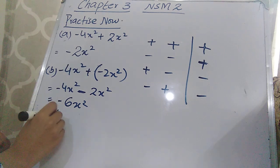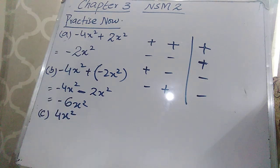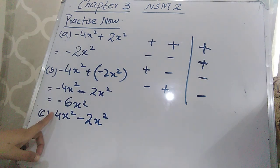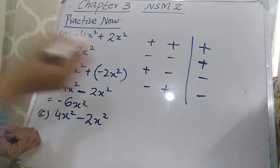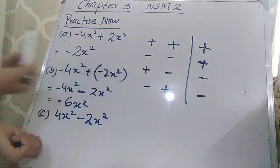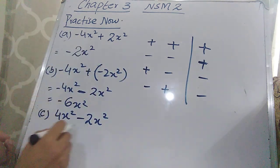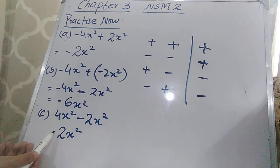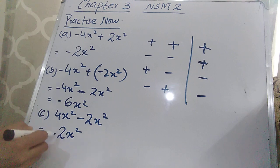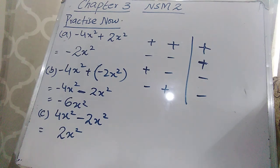For part (c): 4x² − 2x². When there is no sign in front of a number it means it has a plus sign. Plus and minus gives minus, so the operation is subtraction: 4 − 2 = 2. Write the variable x². The bigger number is 4 and it carries a plus sign, so there is no need to write the plus sign — the answer is 2x².